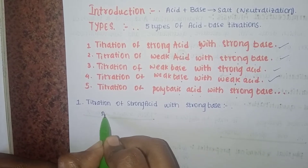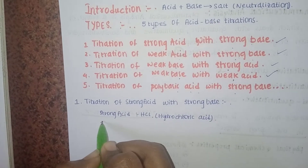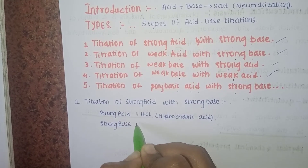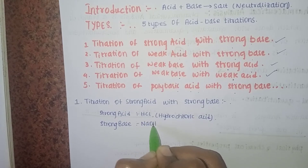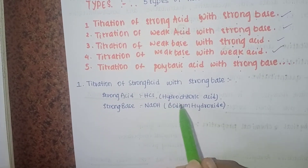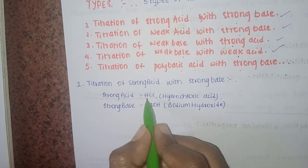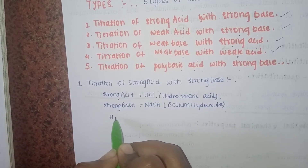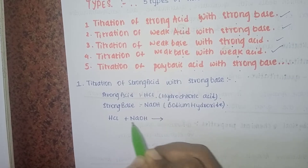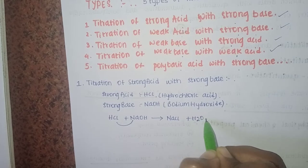Strong acid is HCl, hydrochloric acid. Strong base is sodium hydroxide, NaOH. When strong hydrochloric acid reacts with sodium hydroxide, a strong base, a chemical reaction occurs between HCl and NaOH. It gives rise to sodium chloride, NaCl, as a salt, and water is produced.